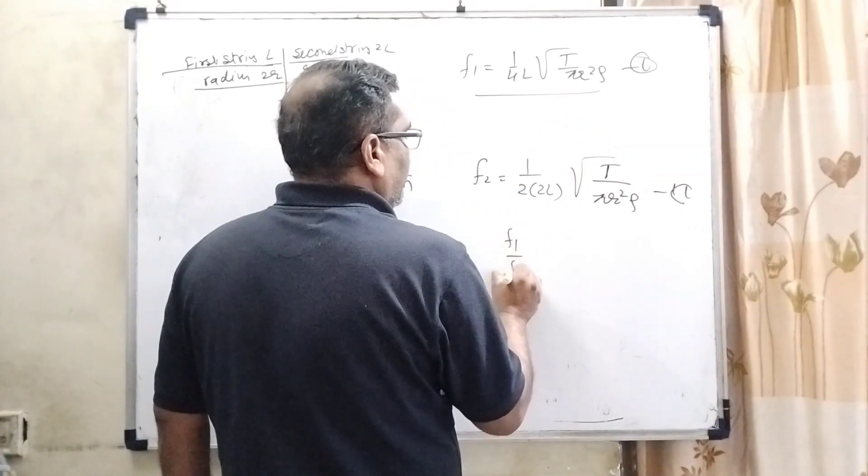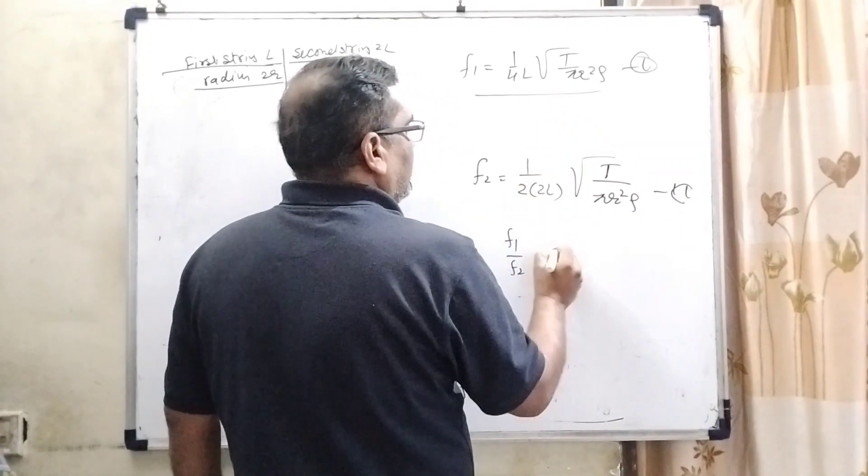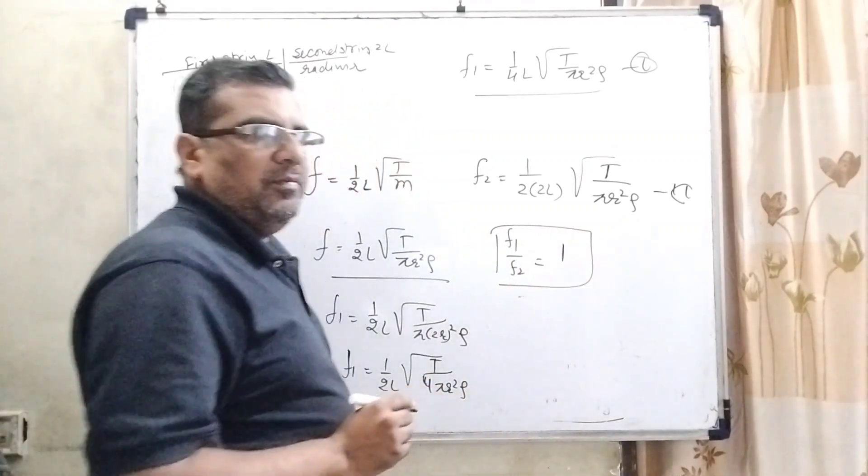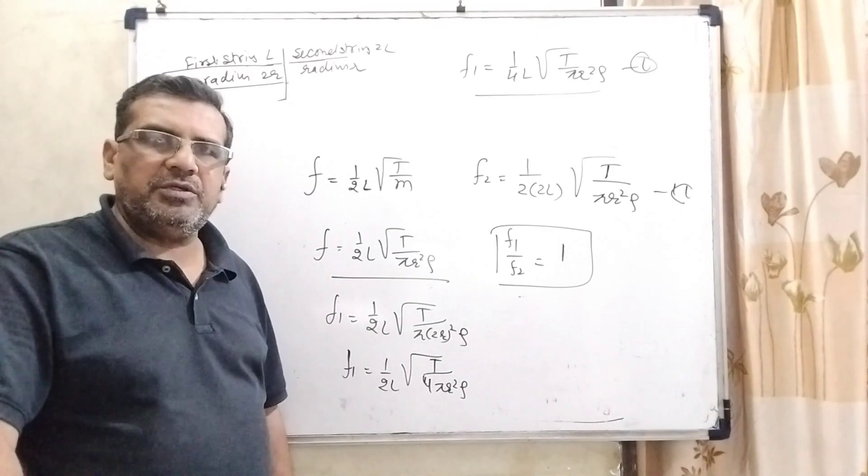Then f1 upon f2, we can see that is equal to 1. So here the answer is f1 upon f2 is equal to 1. I hope you understood this question.